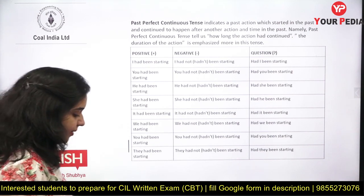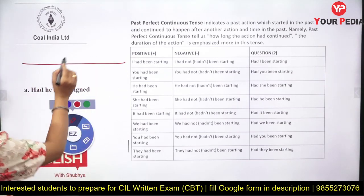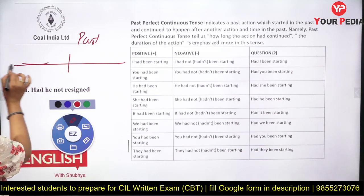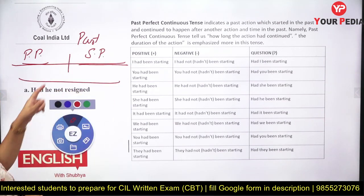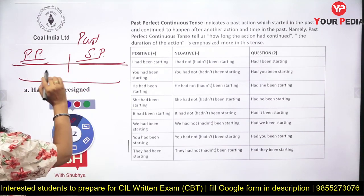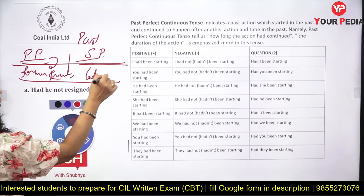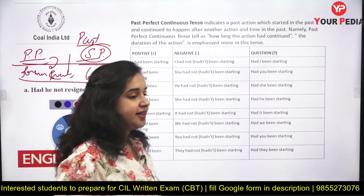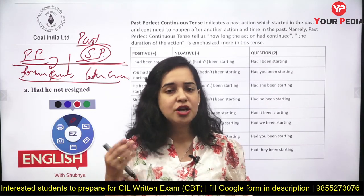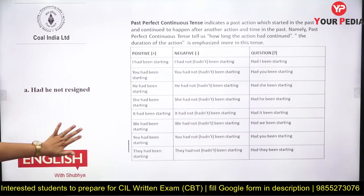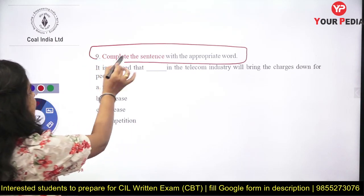An important grammar rule: when a sentence is in the past, both parts cannot be in the same form. One part uses past perfect and the other uses simple past. For an earlier event, use past perfect; for the later event, use simple past. Example: 'The patient had died when the doctor arrived' — the patient dying is the earlier event (past perfect), the doctor arriving is the later event (simple past).